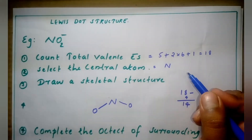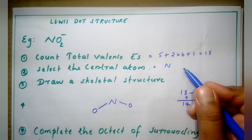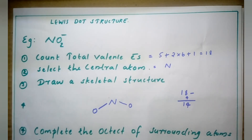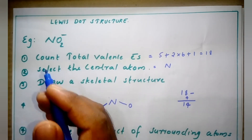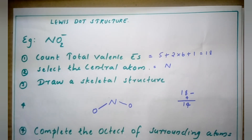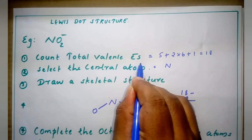Hello everyone, we are discussing Lewis dot structure — how to draw the Lewis dot structure of a compound. Here I am taking an example: NO2 minus. The first step is to count the total valence electrons.